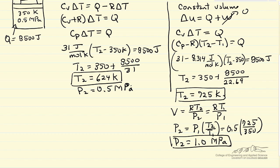Notice the temperature is significantly higher for the constant volume process — about 100 degrees higher — because in the constant pressure process, some of the heat added went into work, which was removed from the system. The rest went to raising the temperature and increasing internal energy. In the constant volume system, all the heat added went into raising the temperature and increasing internal energy, and therefore the temperature is higher.